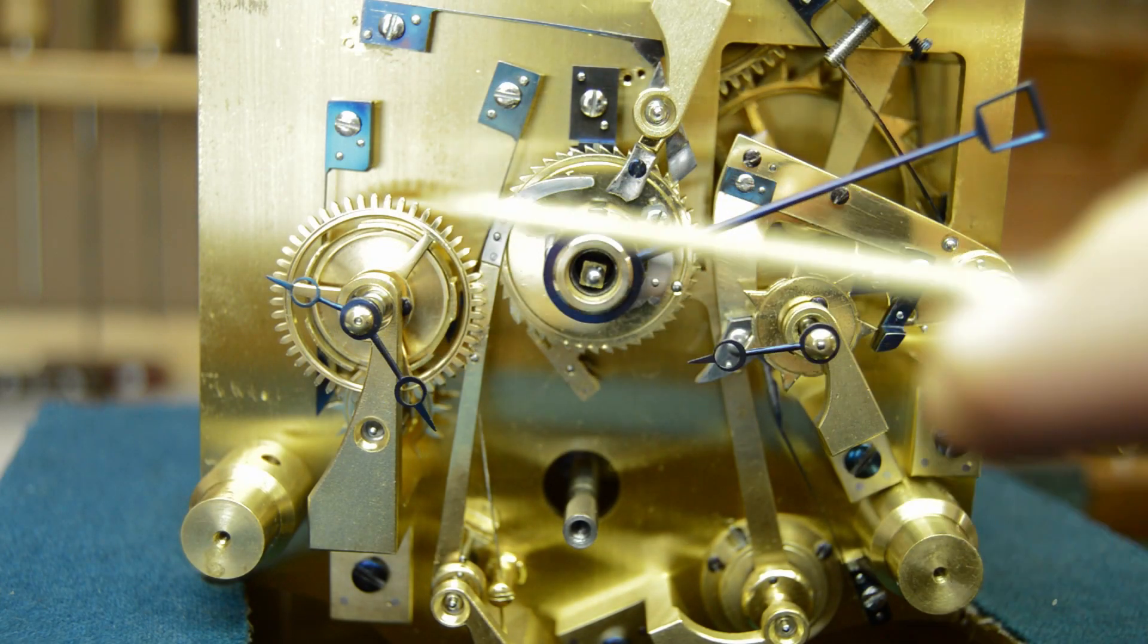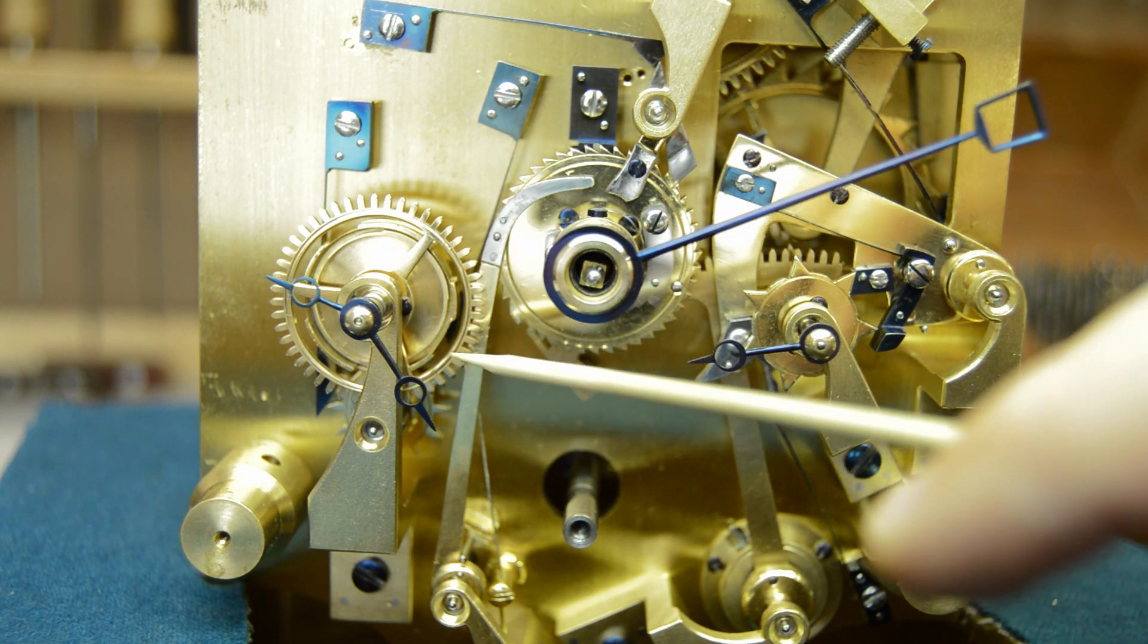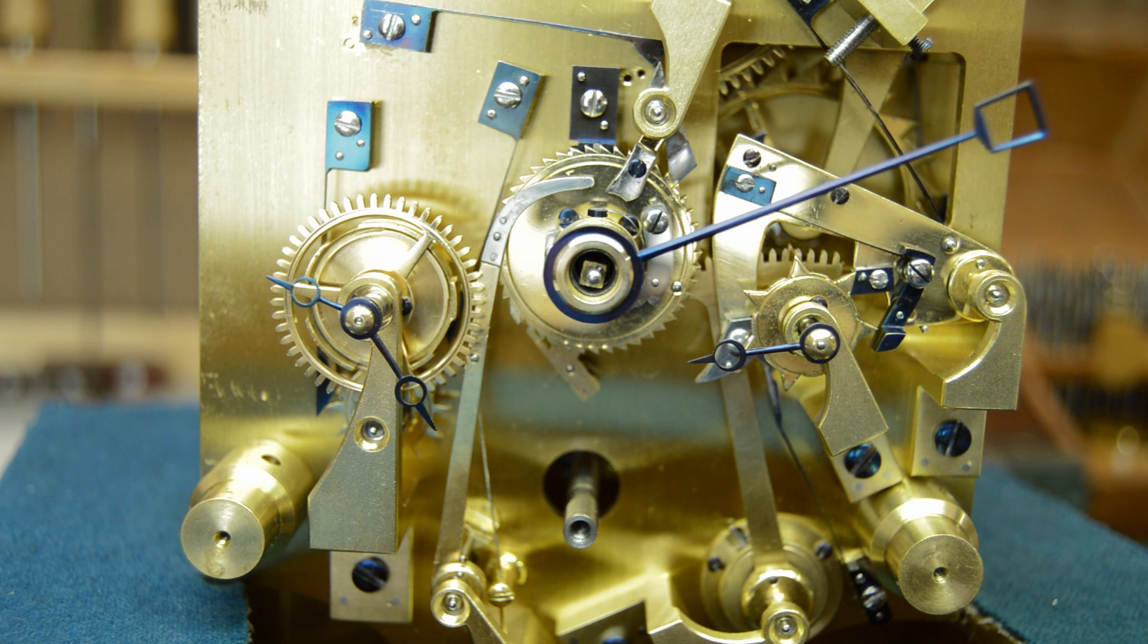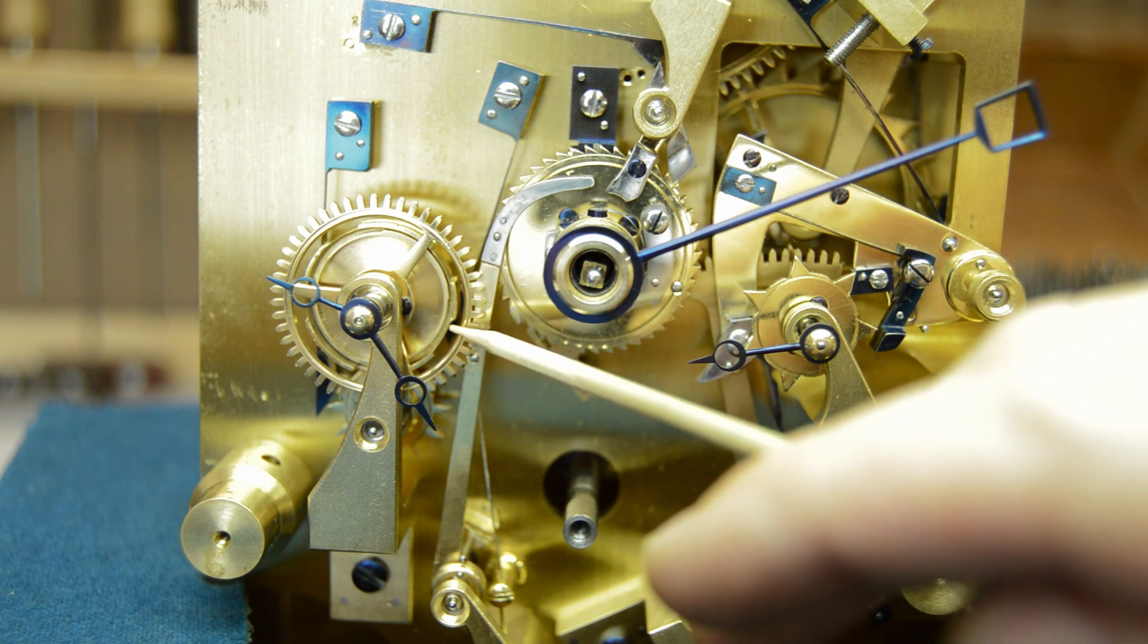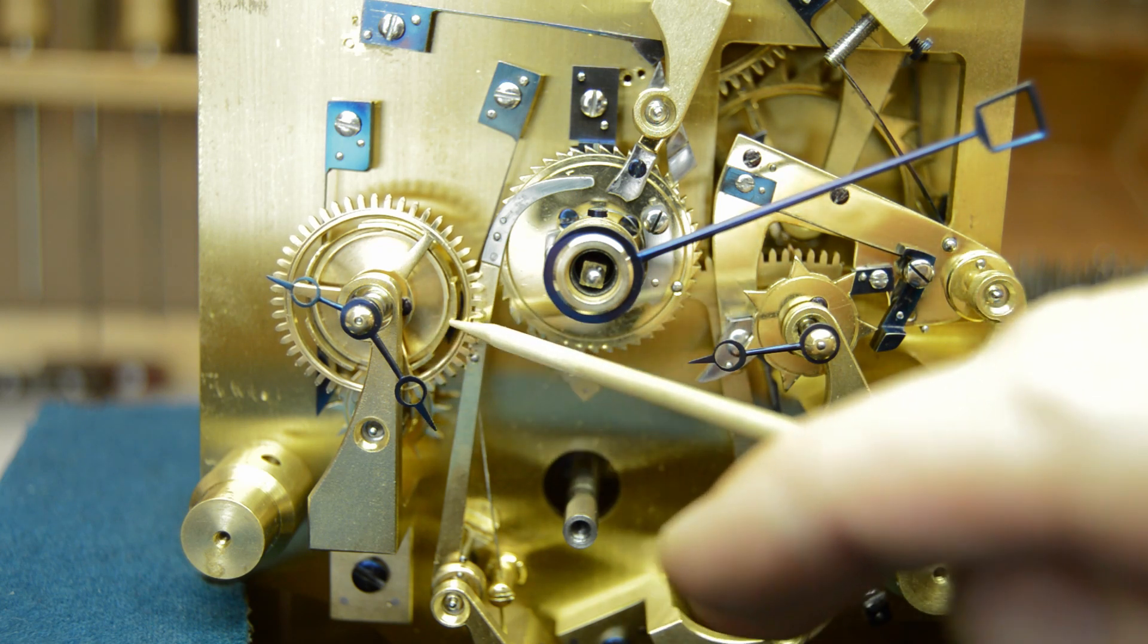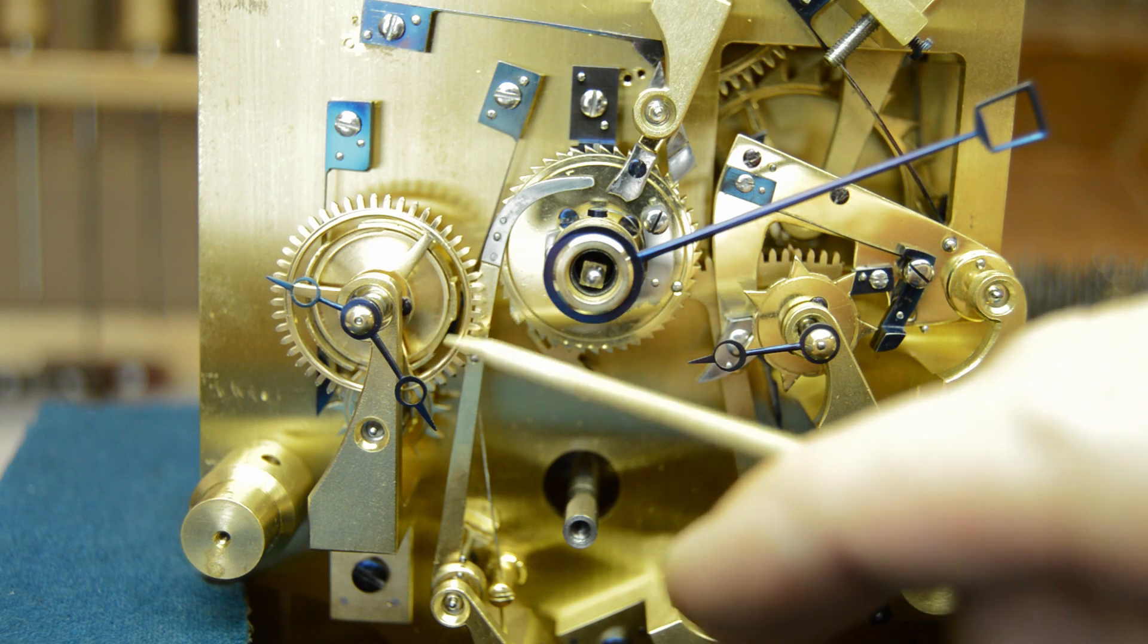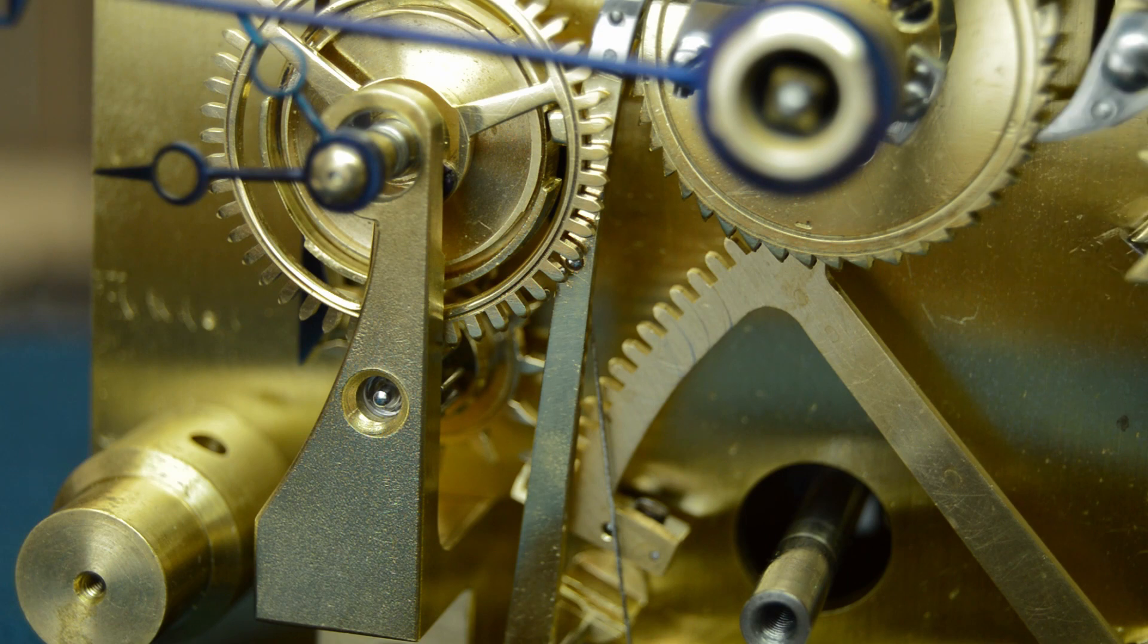Over on this side, this is the clever bit of the system really. This is the mechanical computer if you like that calculates the leap year, the 29th day of February. What you've got is a cam within a cam. The outer cam and inner cam move independently to each other, although they are linked through a wheel and pinion. The outer cam has different lobes on it. The taller lobe is for the 31 day months and the deeper lobe is for the 30 day months.